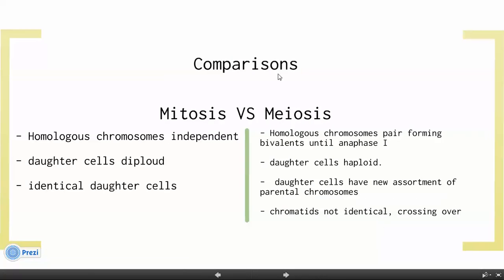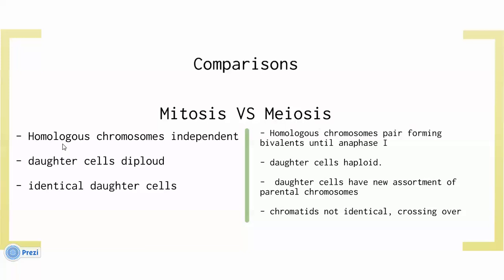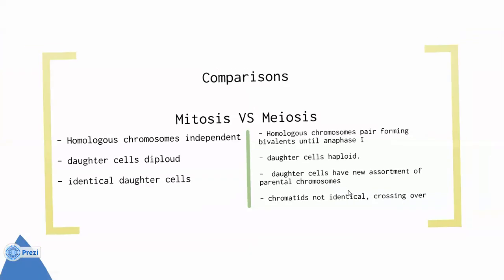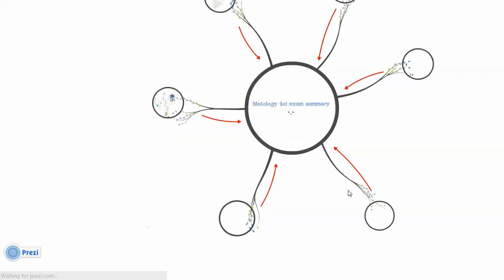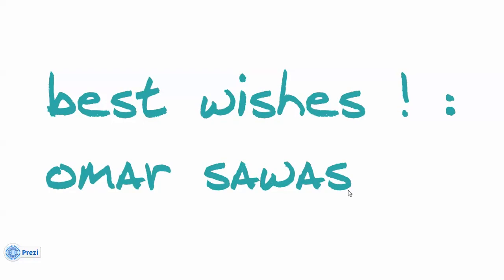In comparison between mitosis and meiosis: in mitosis, homologous chromosomes are independent, but in meiosis, homologous chromosomes pair to form bivalents in prophase 1. In mitosis, daughter cells are diploid and identical. In meiosis, daughter cells are haploid and not identical, because of crossing over. That's everything about the lectures from the first two weeks. My best wishes — your colleague, Omar.